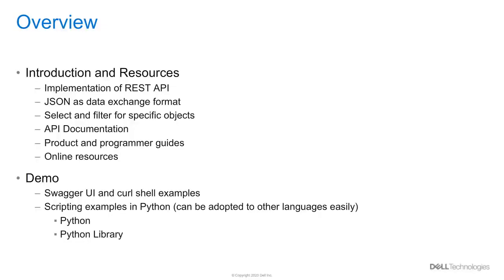This slide gives a short overview of what we try to cover in this video. It will start with an introduction to PowerStore REST API implementation, how data is exchanged, and shows selecting and filtering specific objects. The first part ends with a collection of useful information using REST API and online resources for reference. In part 2, we will show discovering REST API using the built-in Swagger UI, which is available on all PowerStore cluster installations and gives a good starting point to learn more about how REST API can be used.